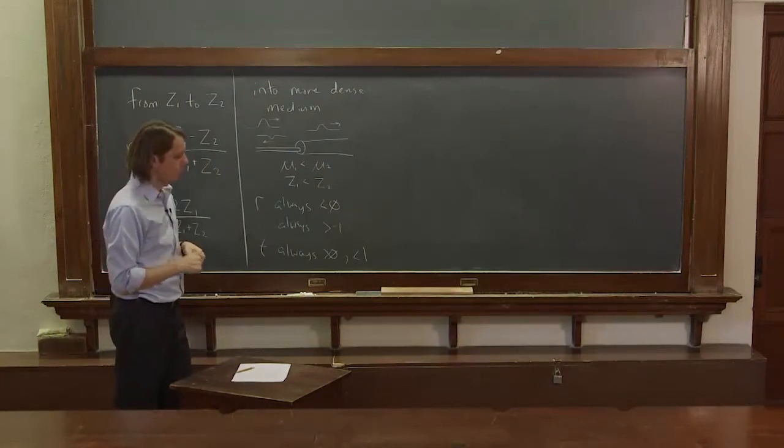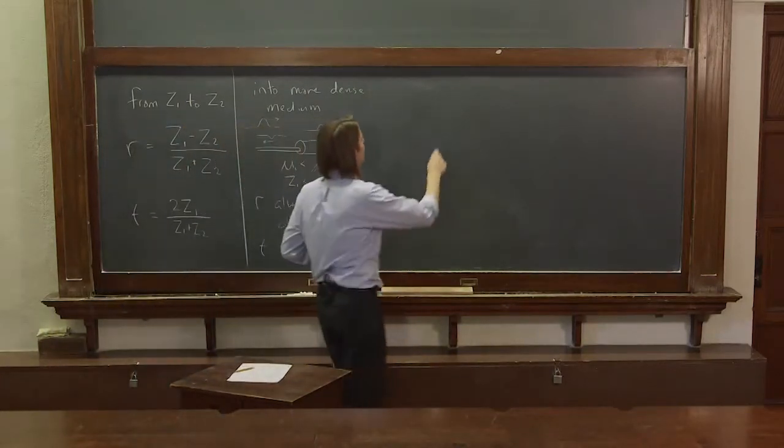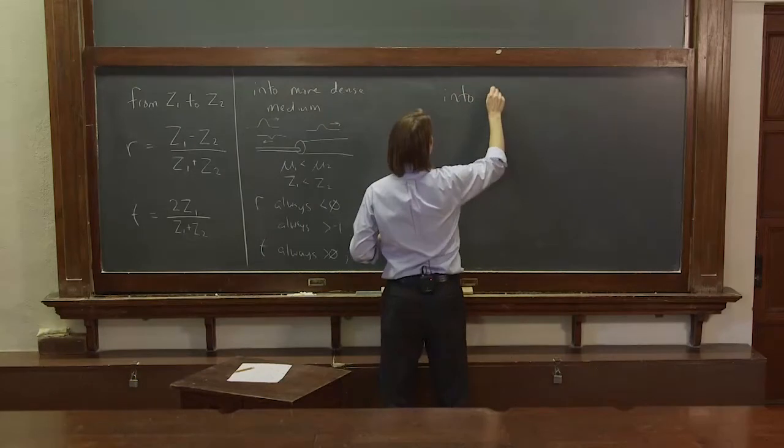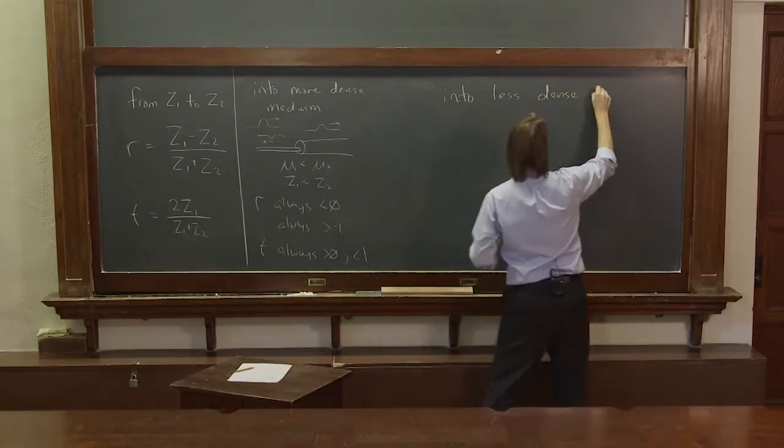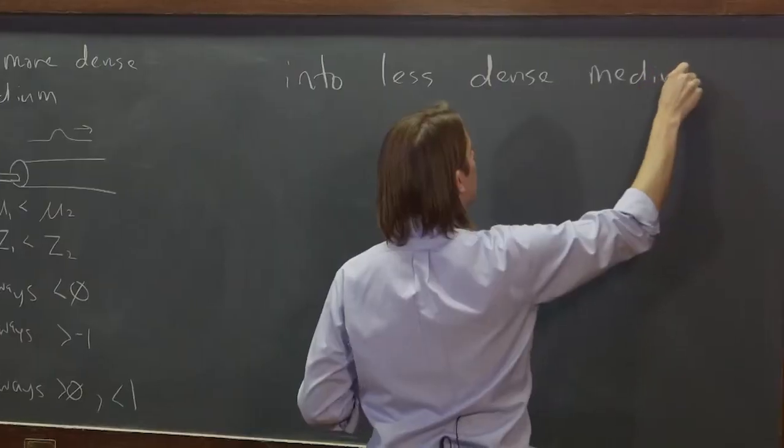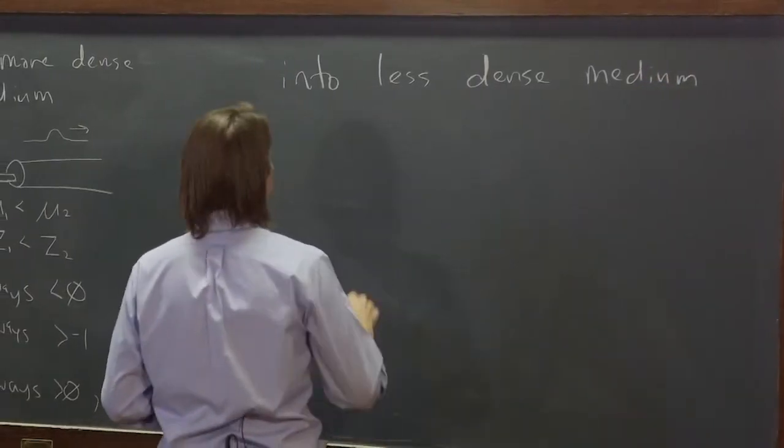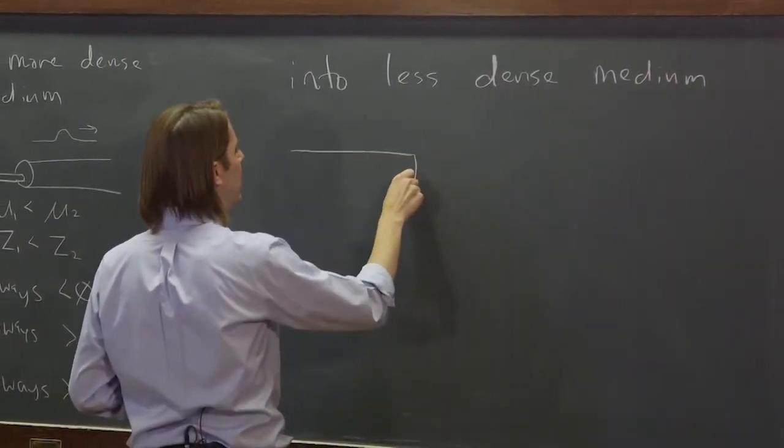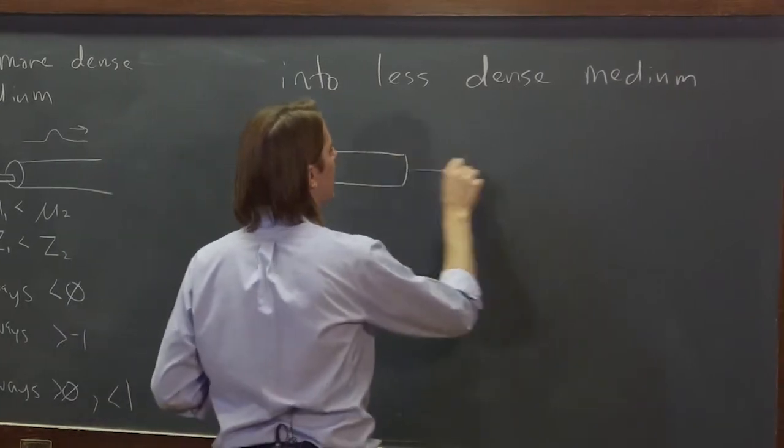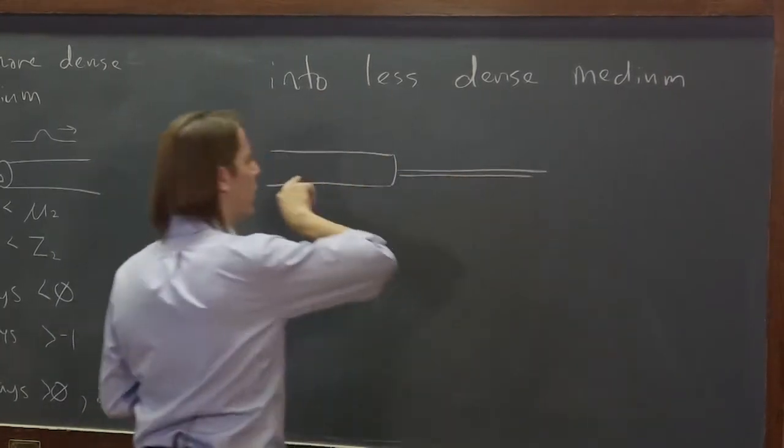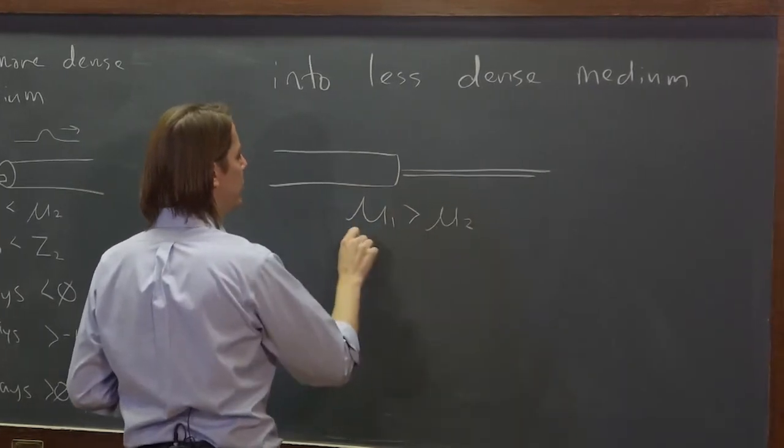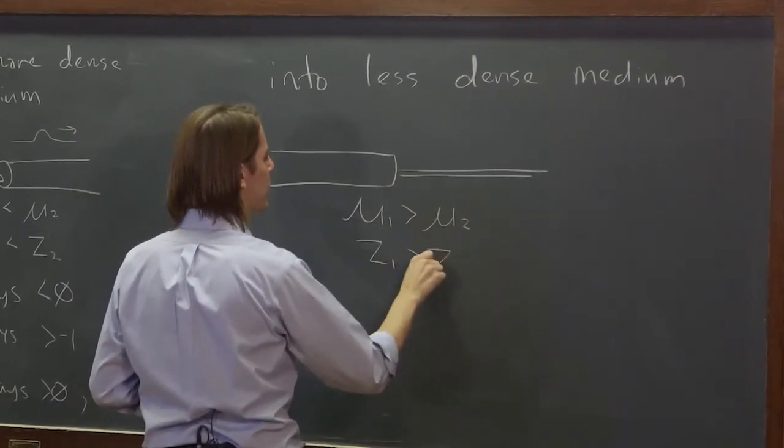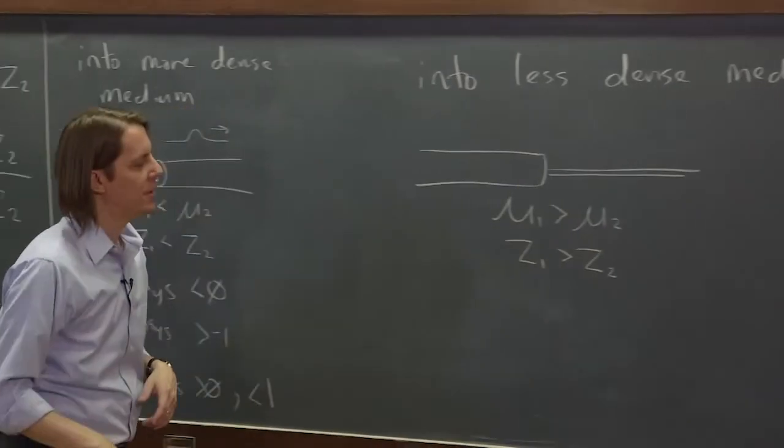Let's go into a less dense medium and see what happens. So that would be the case that we have a heavy string, and we're always coming this way, right? So mu1 is greater than mu2, therefore z1 is greater than z2.